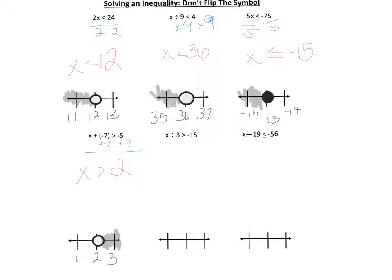The fifth example: x divided by 3 is greater than negative 15. We do the inverse of division, which is multiplication. We get x is greater than negative 45, so we have an open circle at negative 45 — it's open because we're not including it. We shade everything that is more than negative 45, so we go to the right. Negative 44 is more than negative 45.